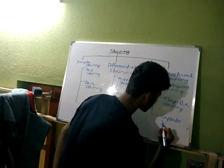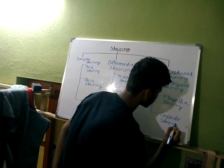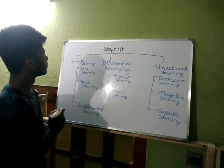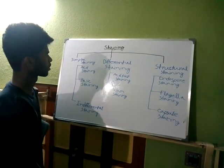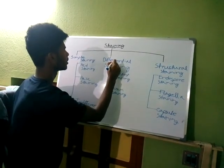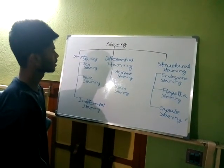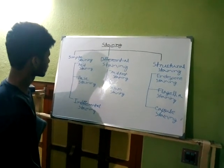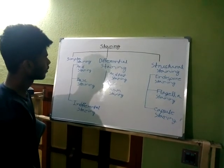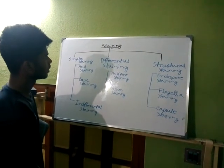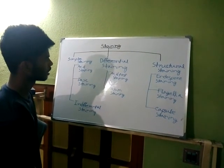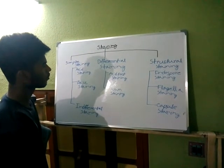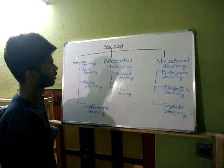So this is the total classification of staining. Staining are three types: simple staining, differential staining, and structural staining. Simple staining are also three types: acid staining, basic staining, and differential staining. Differential staining are two types: acid fast staining and gram staining. Structural staining are also three types: one is endospore staining, second is flagella staining, and the third is capsule staining. Thank you.